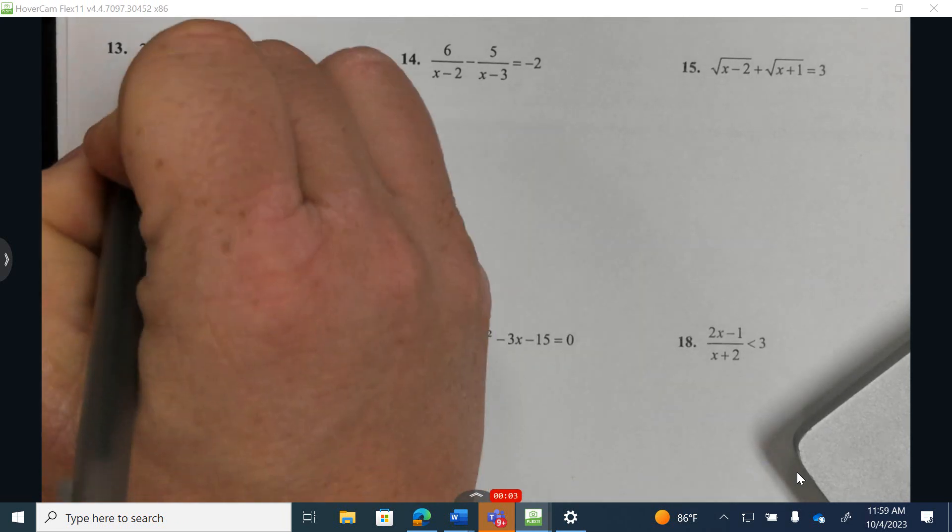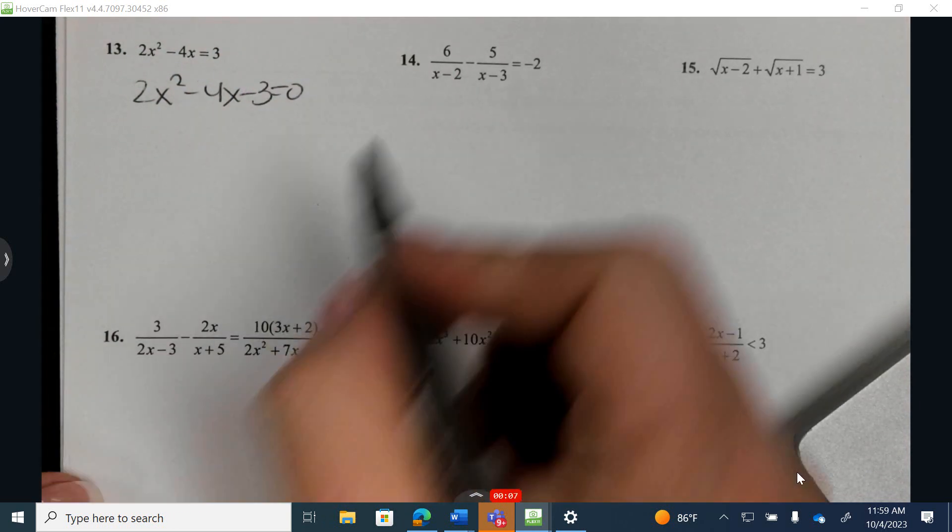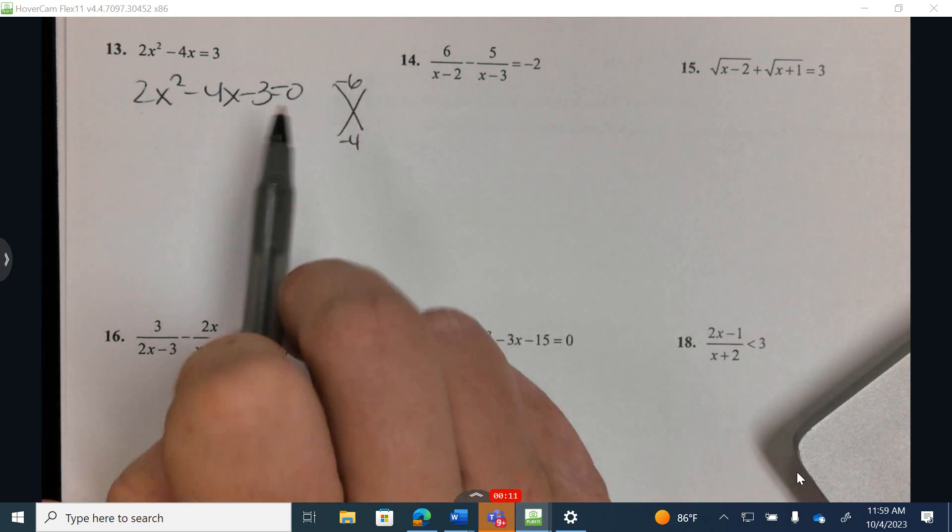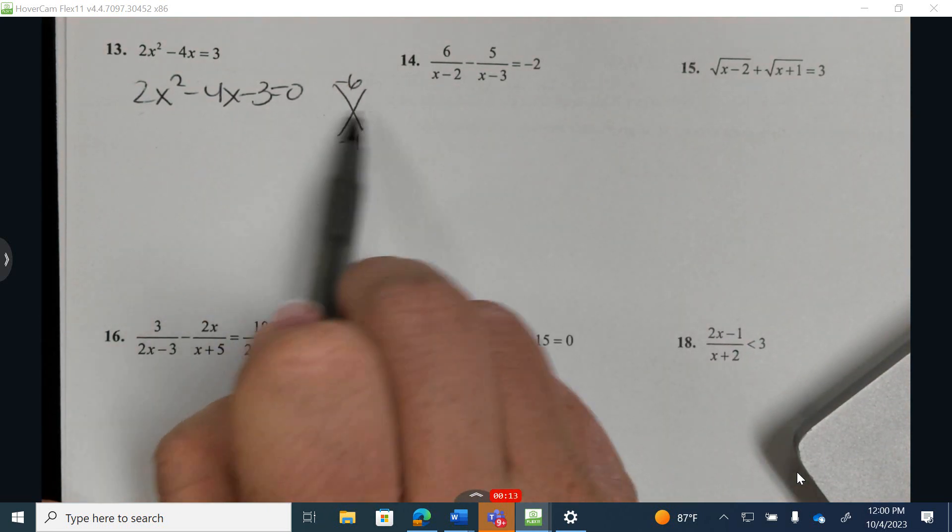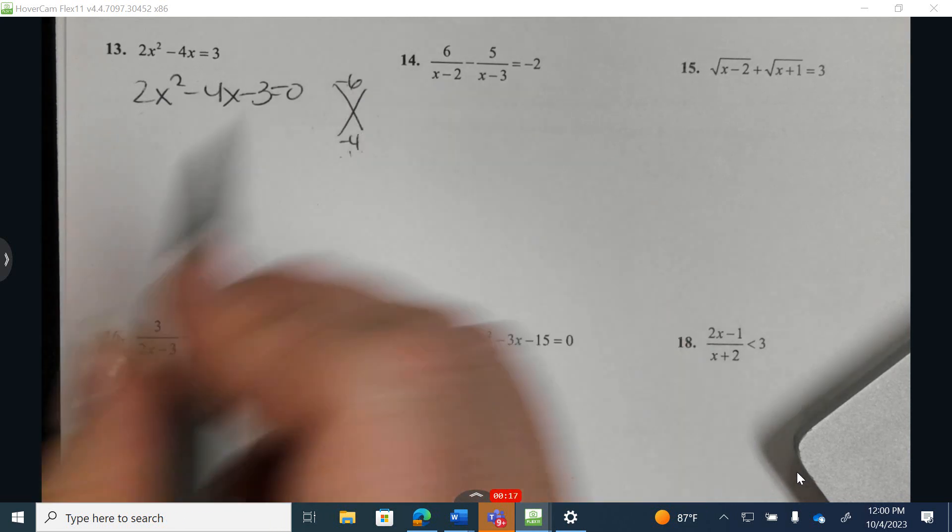Number 13, I'm going to move the 3 to the opposite side, and I'm solving this trinomial. Let's see, can we do it by factoring? 2 times negative 3 is negative 6. Do I know two numbers that multiply to give us negative 6 combined to give us negative 4? 1 and 6, no. 2 and 3, no. What do we do?